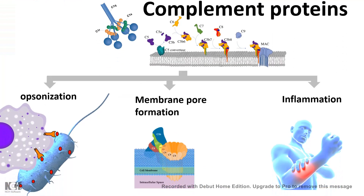Complement proteins basically help in opsonization. Opsonization is equivalent to the term neutralization. This complement protein creates a coat around the pathogen which is recognized by several phagocytic cells such as macrophages. Apart from that, this complement protein, once activated, can create a membrane pore. From this membrane pore, fluid can leak out. As a result, it can create an osmotic disbalance and thereby lysis of the bacteria.